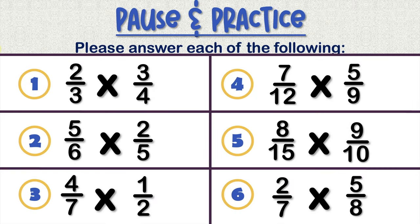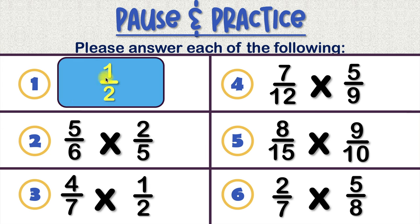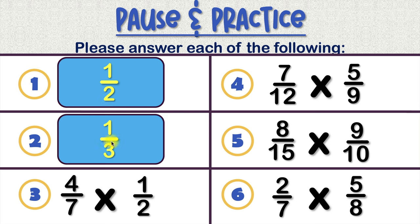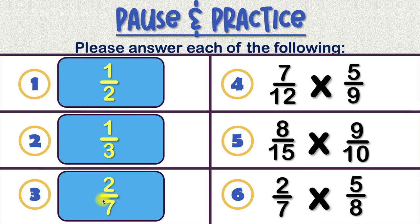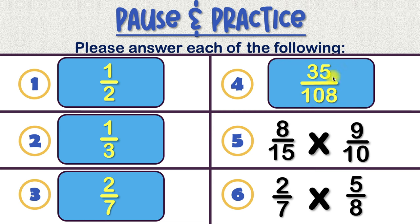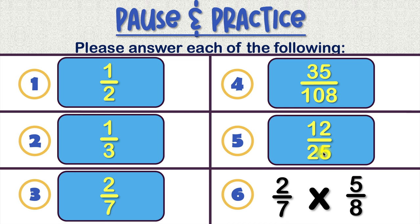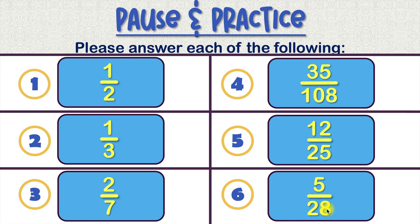So let's take a look at our answers. Number 1 is 1 over 2. Number 2 is 1 over 3. Number 3 is 2 over 7. Number 4 is 35 over 108. Number 5 is 12 over 25. And number 6 is 5 over 28.